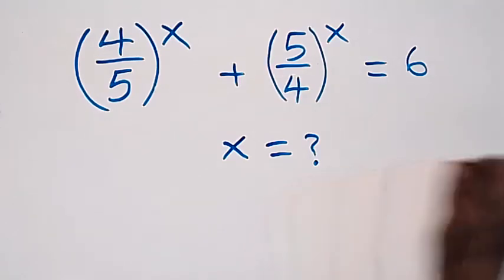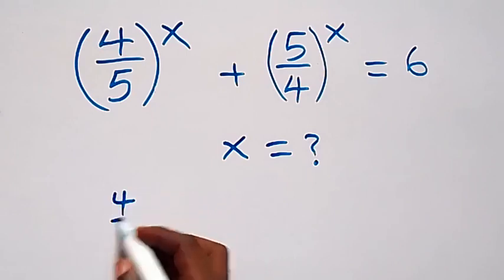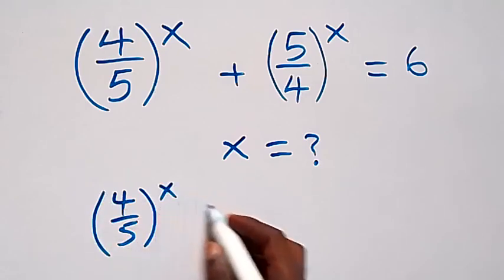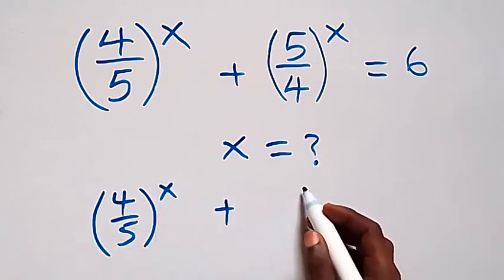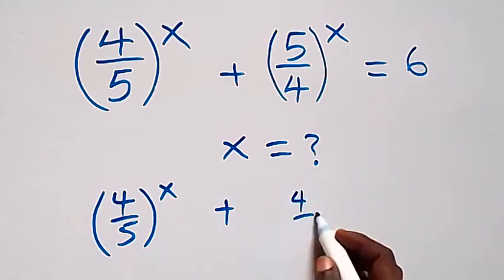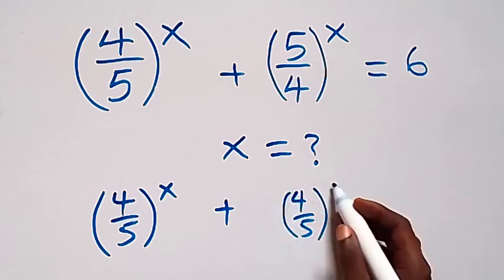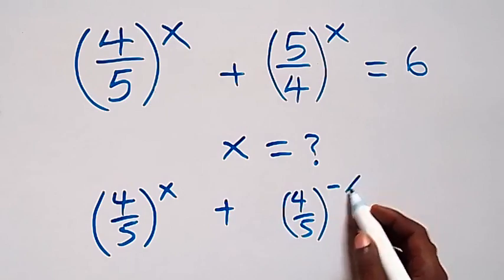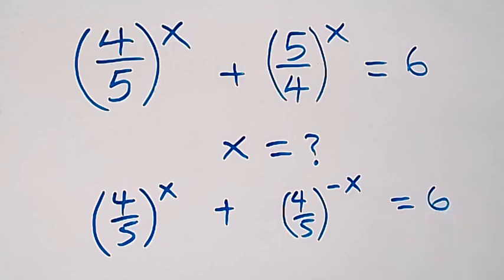This will give us 4 over 5 raised to power x. Then here, this will be plus. We have 4 over 5 raised to power minus 1, then times x, as minus x, equals to 6.